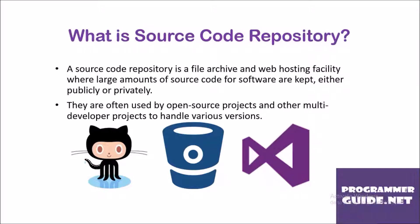What is meant by source code repository? A source code repository is a file archive and web posting facility where a large amount of source code for software is kept either publicly or privately. They are often used by open source projects and other multi-developer projects to handle various versions. Some of the famously available source code repositories are Visual Studio Team Service, Bitbucket and GitHub.